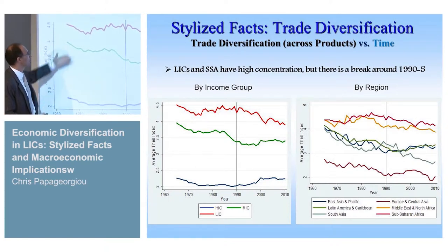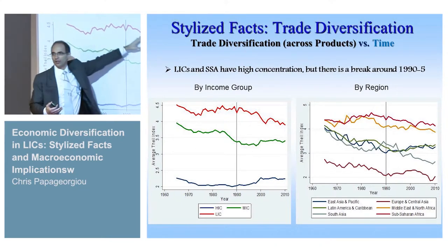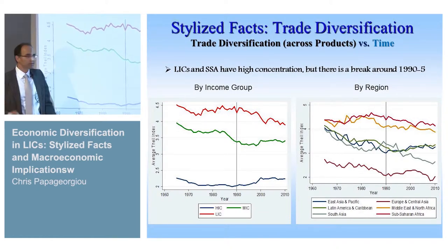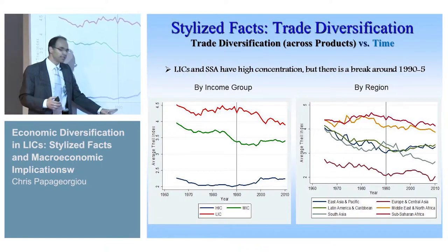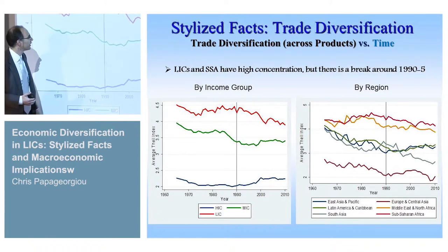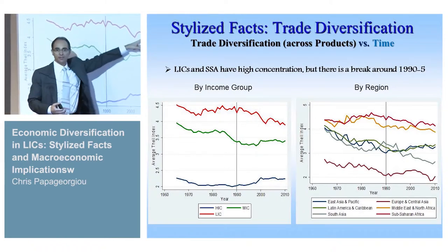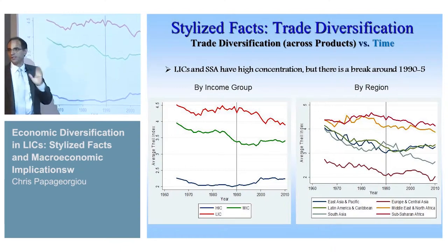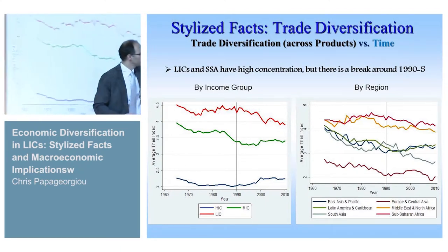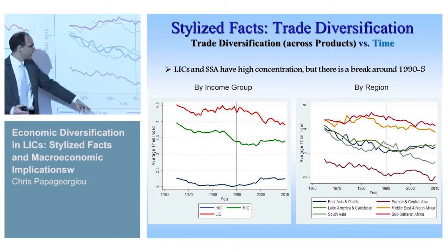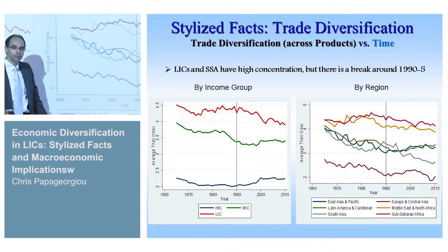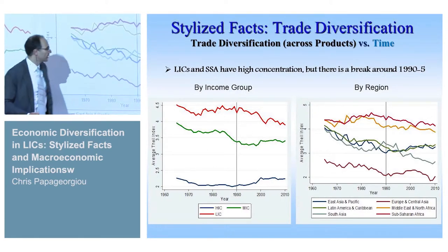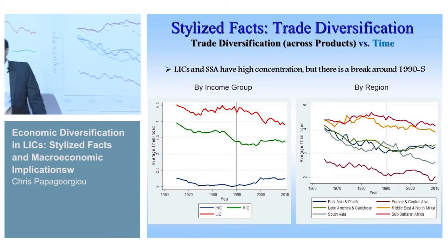The first thing that jumps out is that low-income countries are less diversified — very high up in the index — while high-income countries are very diversified, down at the bottom. The interesting thing worth noting is that since the mid-1990s, you start seeing an increase in diversification, indicated by the lowering of this index. It's quite dramatic for only 15 years. And on the right-hand panel, this is primarily driven by two groups: Sub-Saharan African countries and East Asia, with Sub-Saharan Africa being the main contributor.